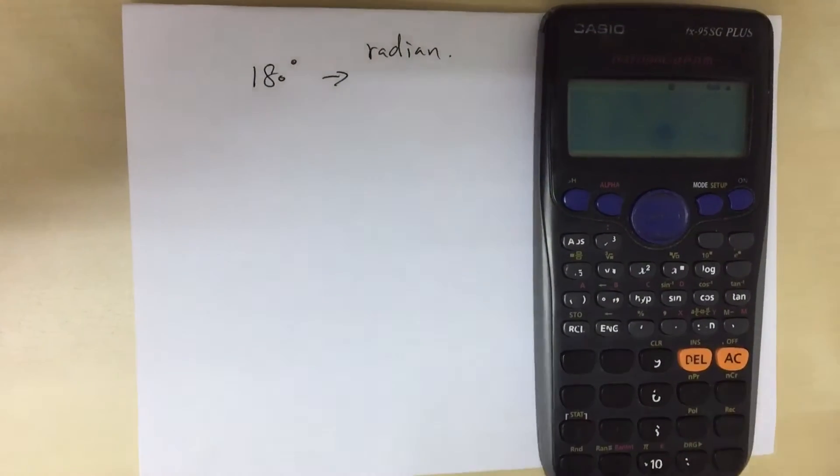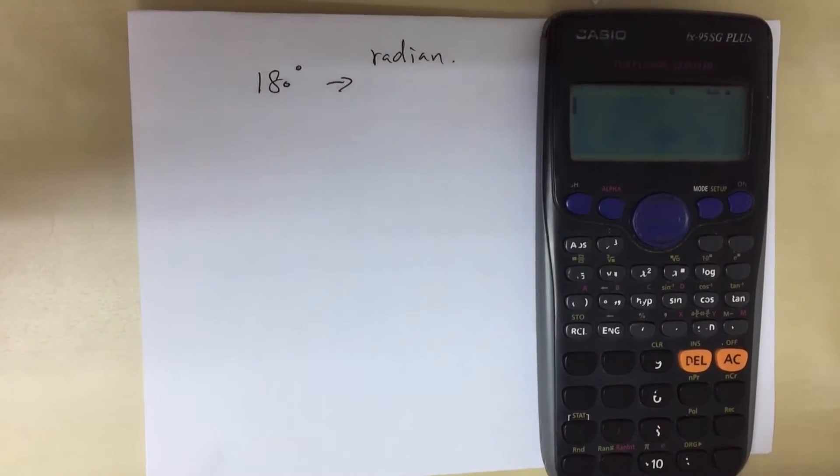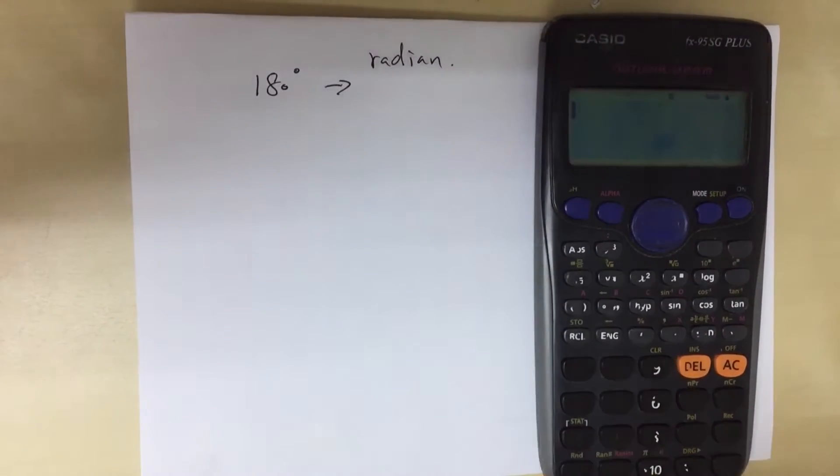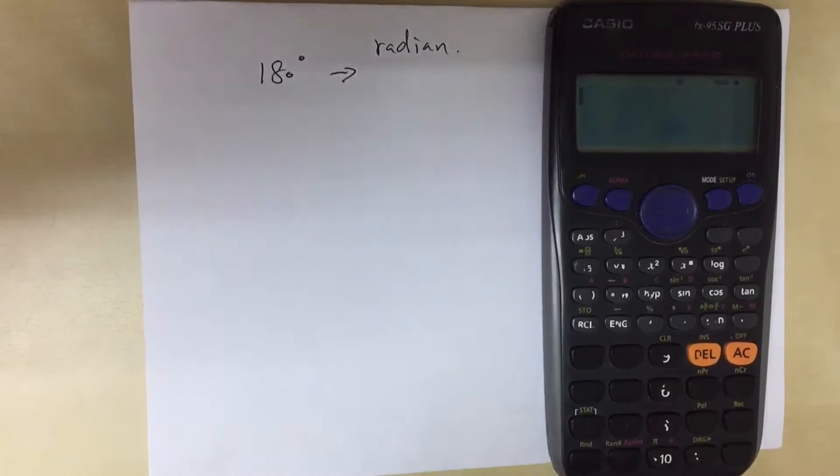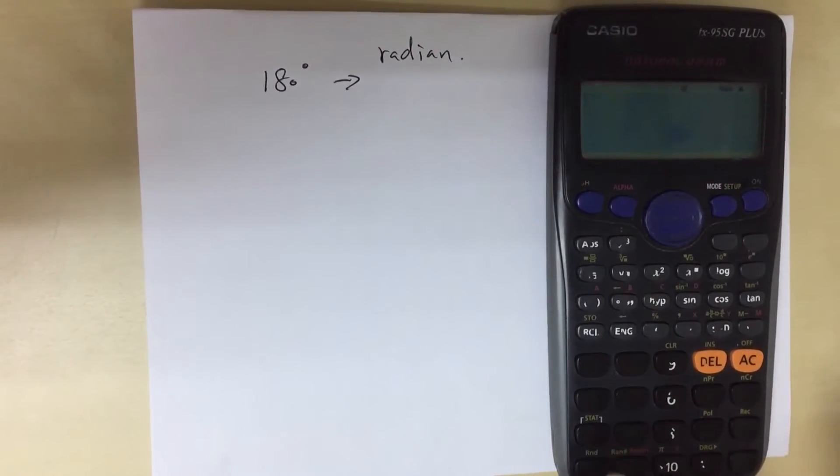Hi students, today I'm going to demonstrate how to use the Casio FX95SG plus calculator to convert from degree mode to radian mode.